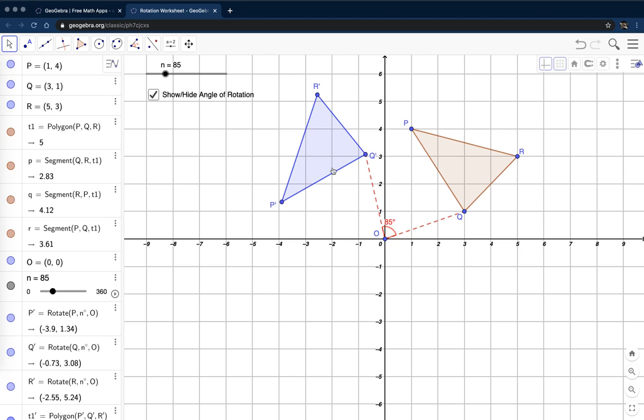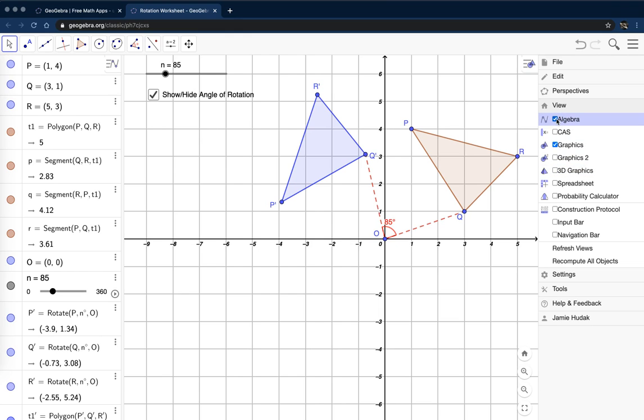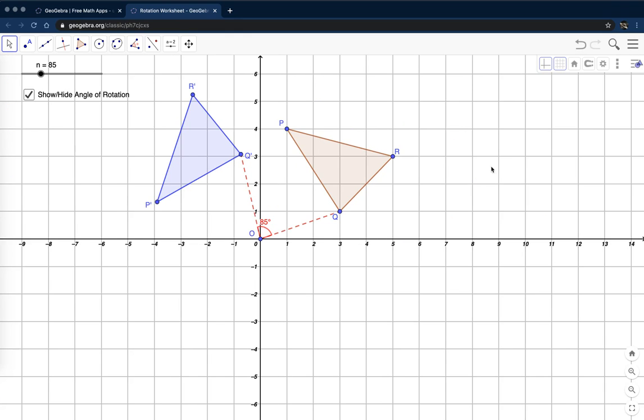So, we have our worksheet now. I don't want this algebra pane view anymore. So I'm going to come over to my menu. I'm going to look for the view option. Here it is. And I'm going to say, I don't need to see the algebra pane anymore. And then I'll close the menu.